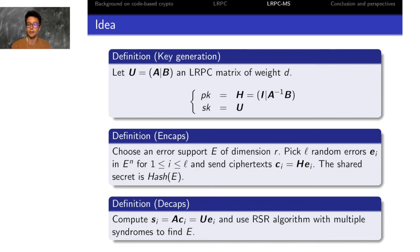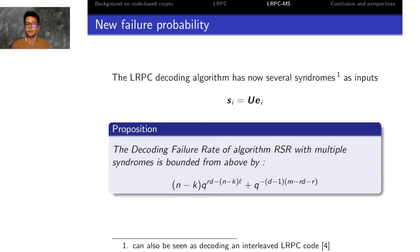With that approach, the LRPC decoding algorithm has several syndromes as inputs, and its decoding failure rate is more controllable because the parameter L is taken into account in the upper bound of the decoding failure rate. So you can have more competitive parameters with this formula for the decoding failure rate. If you want the details of the proof of this proposition, we invite you to read the dedicated section in our paper.